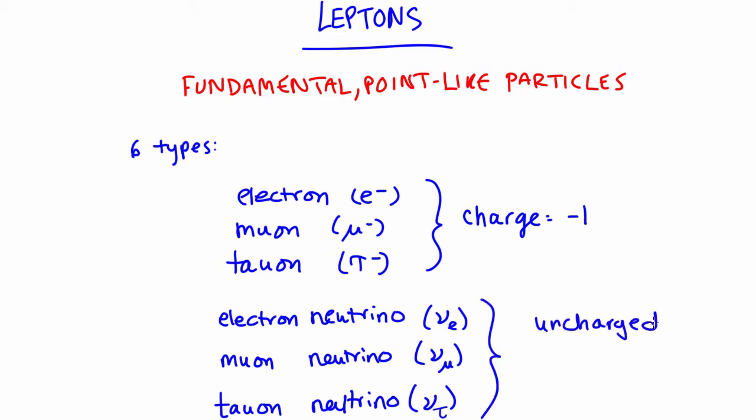At this stage, you might be wondering why the names of these uncharged leptons are so uncreative. Well, there's a reason for this name association. If you recall nuclear beta decay, you might have some idea of why.